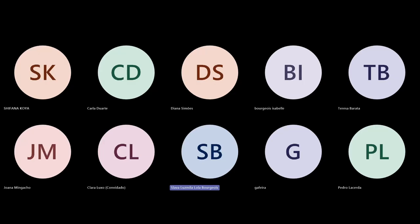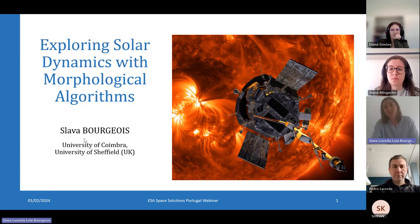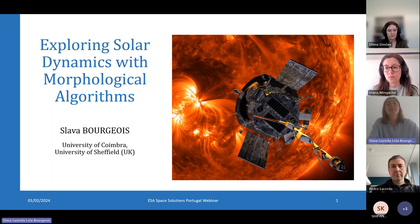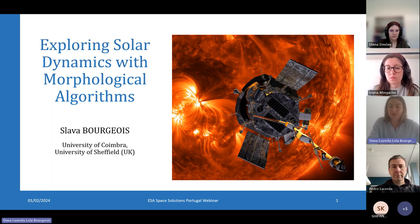My name is Sabah Bourgeois and I am a PhD student at the University of Coimbra. I also have a second university in Sheffield in the UK and my field of research is solar physics. More specifically, my PhD project is about solar feature identification.